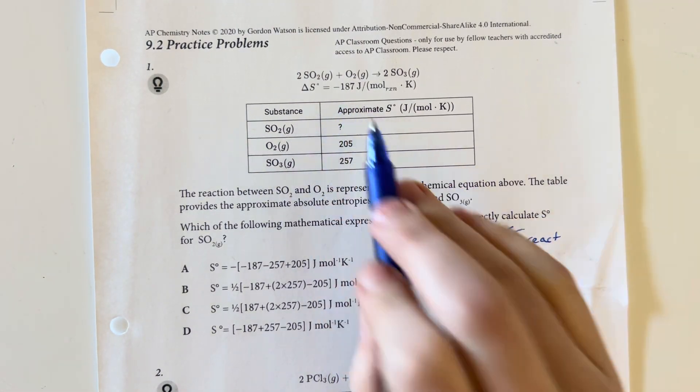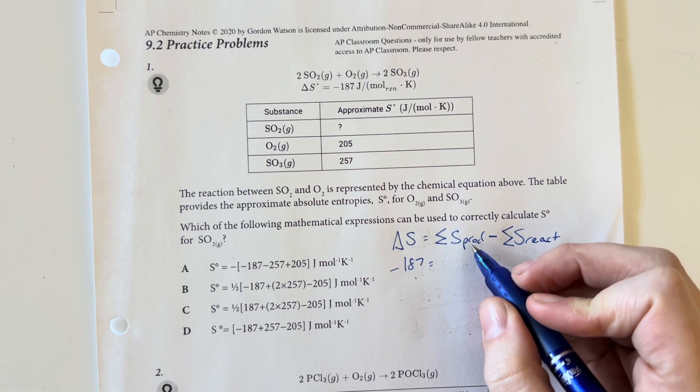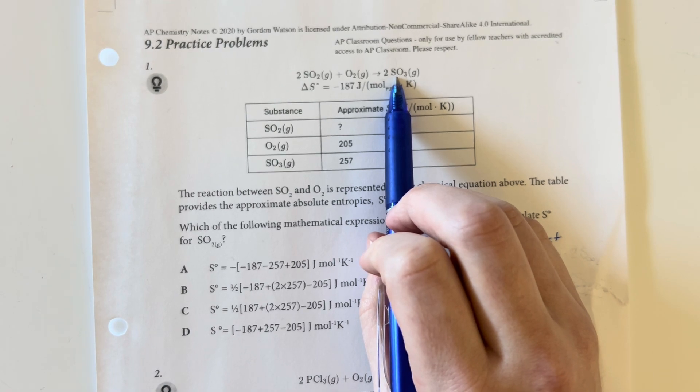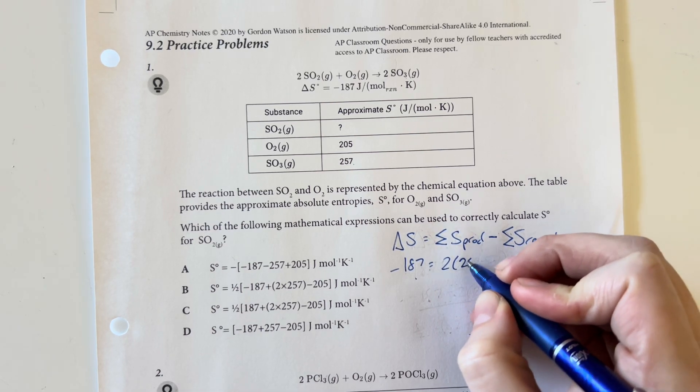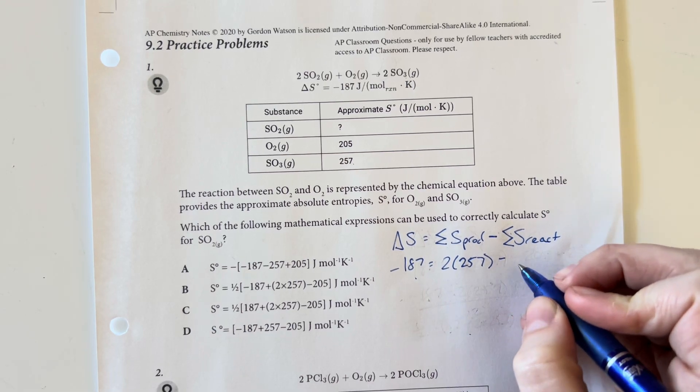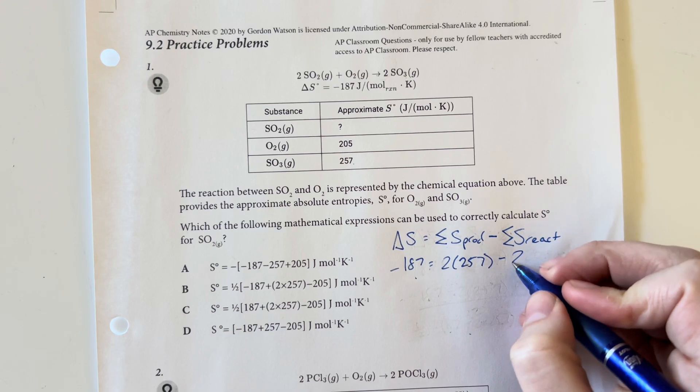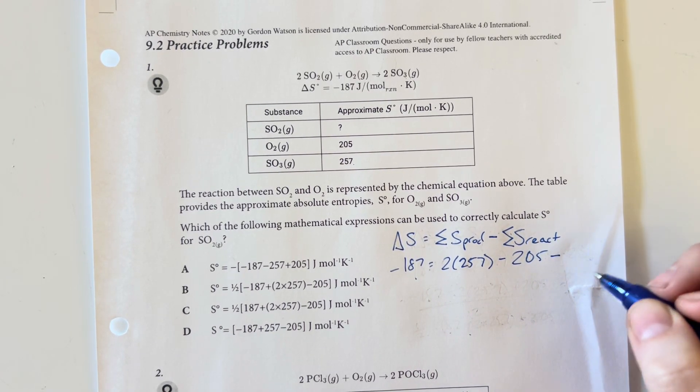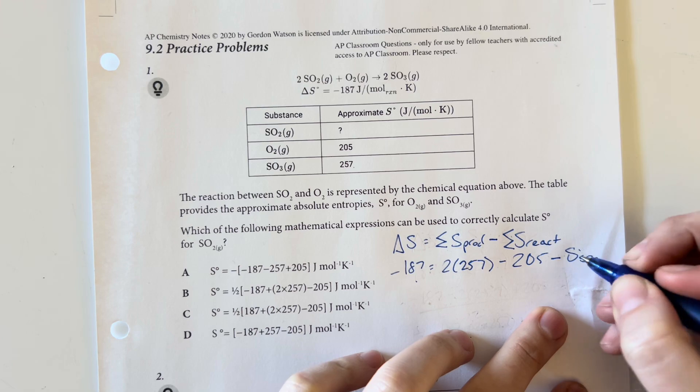We know that our delta S is equal to negative 187. Our product for this reaction is the sulfur trioxide, and we have two of them. So 2 times 257 minus the oxygen S value, which is 205.